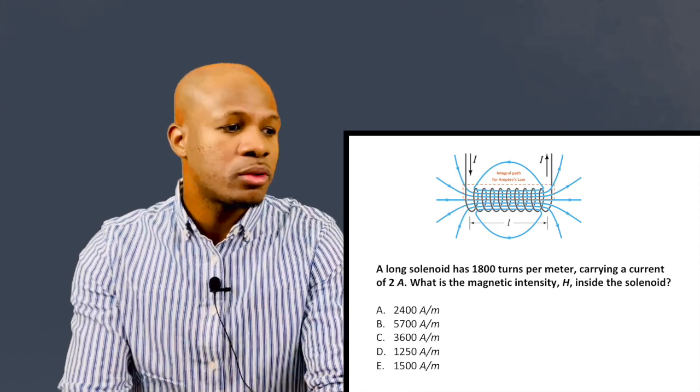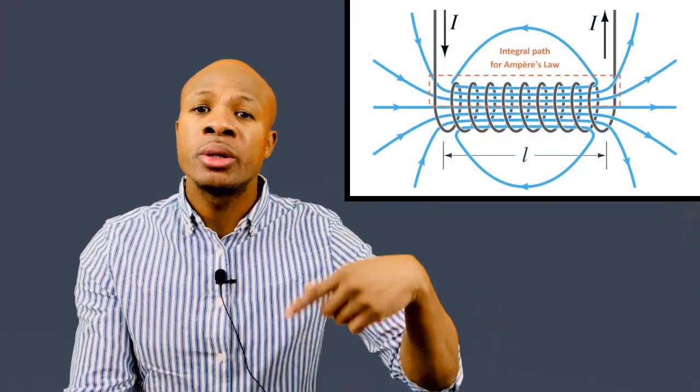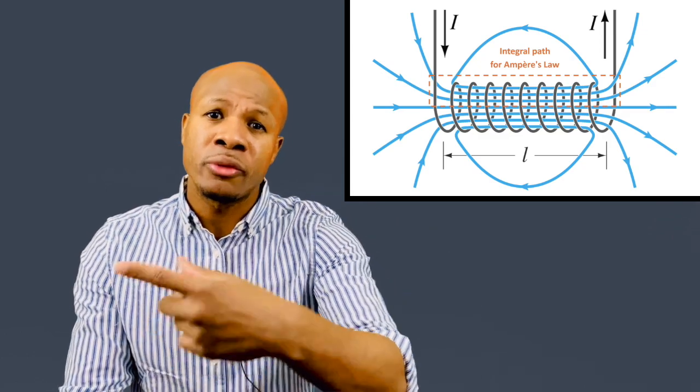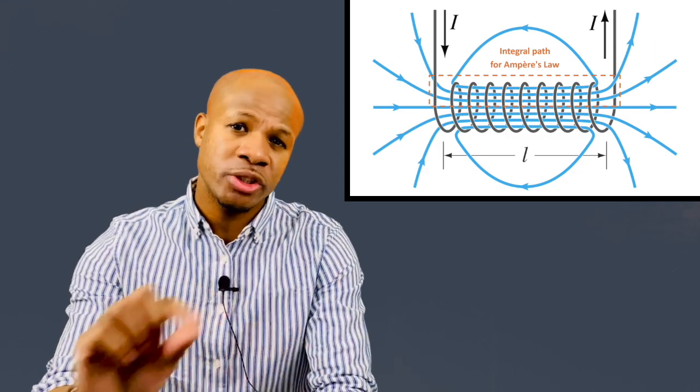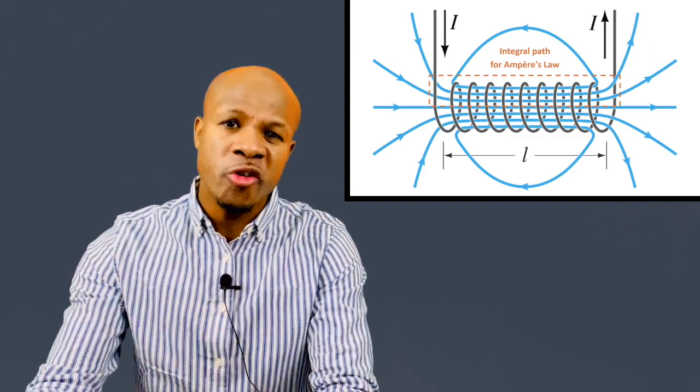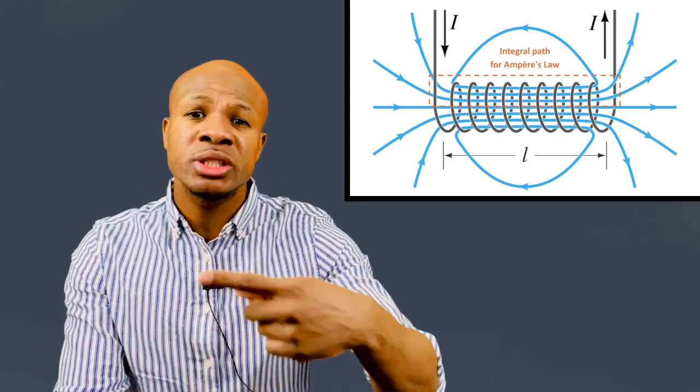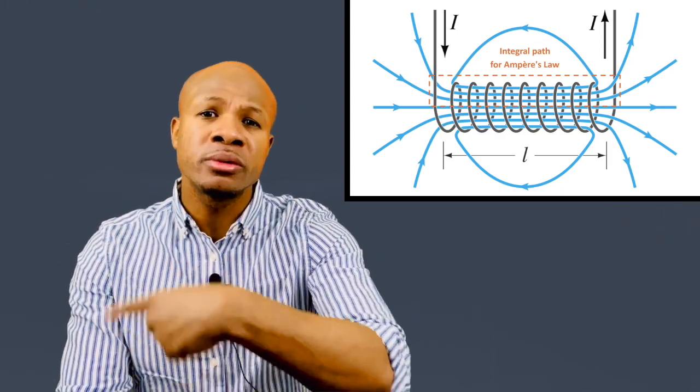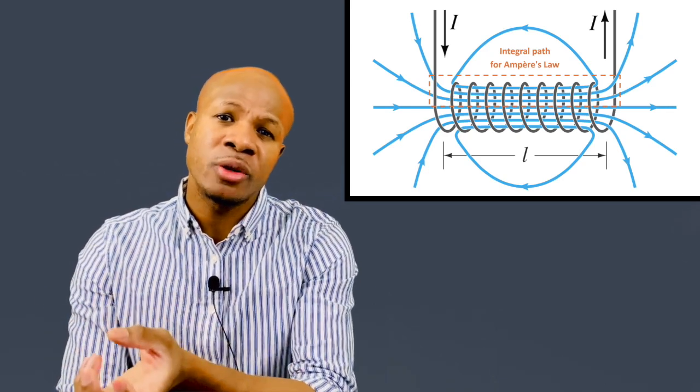So in this question, we have a solenoid. And a solenoid is basically just a cylinder with a bunch of electrical wire wrapped around it. And then you pass electricity through this wire. When you have electricity, when you have the movement of charge, you develop a magnetic field. When you have electricity going around and around in a circle around a cylinder, you develop a uniform magnetic field within the cylinder.